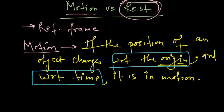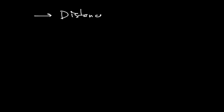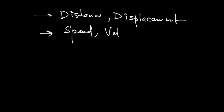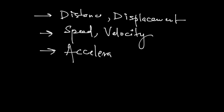If the position does not change, the object is said to be at rest. In order to define motion we need some variables. Those variables are: distance and displacement, speed and velocity, and finally acceleration.